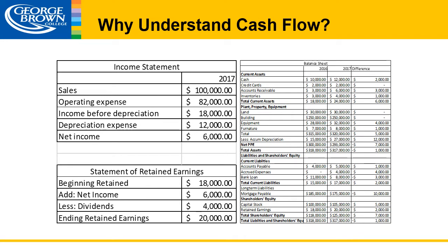Before we define what the cash flow statement is, it's important to understand why we're looking at cash flow. On the left-hand side I've got an income statement and a statement of retained earnings, and on the right-hand side I've got a balance sheet. We're looking at the 2017 figures. One of the primary reasons why we want to understand cash flow is that we pay expenses with cash. It's important to understand how much cash we have and the various metrics we can calculate to indicate whether we're in a good financial position to be paying our expenses, for example interest. You'll notice the difference in our cash position between 2016 and 2017 has changed by $2,000 — it has increased by $2,000.